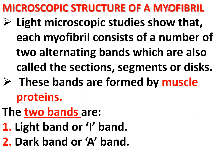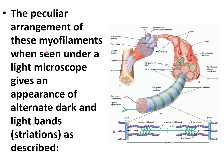Light microscopic studies show that each myofibril consists of alternating bands, also known as sections, segments, or discs. These bands are formed by muscle proteins. The two bands are: the light band or I band, and the dark band or A band. The peculiar arrangement of myofilaments gives the appearance of alternating dark and light bands, or striations.